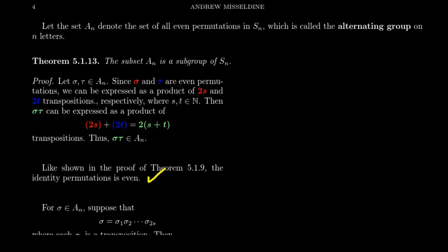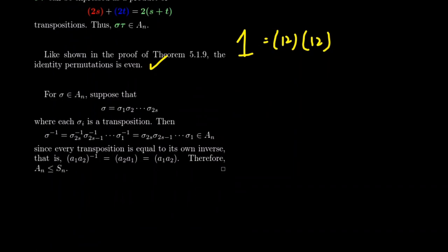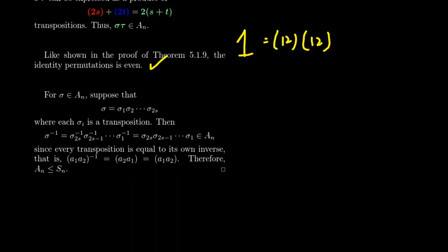We've also established previously that the identity is an even permutation — it can be written as a product of two transpositions. As for inverses, if sigma has a factorization sigma_1 sigma_2 up to sigma_{2s}, then by the Socks principle, the inverse is the product of those same transpositions in reverse order, each inverted. But transpositions are their own inverses — they have order two. So sigma inverse is likewise a product of 2s transpositions, making it an even permutation. This shows the alternating group is closed under multiplication, contains the identity, and is closed under inverses.